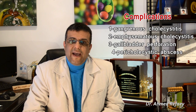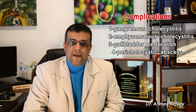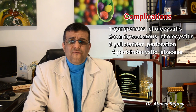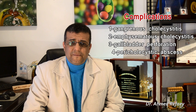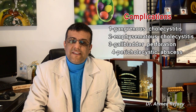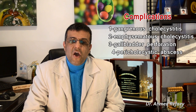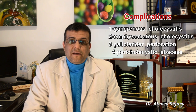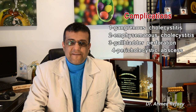The complications of acute cholecystitis — usually four complications — are gangrenous cholecystitis, emphysematous cholecystitis, gallbladder perforation, and pericholecystic abscess.